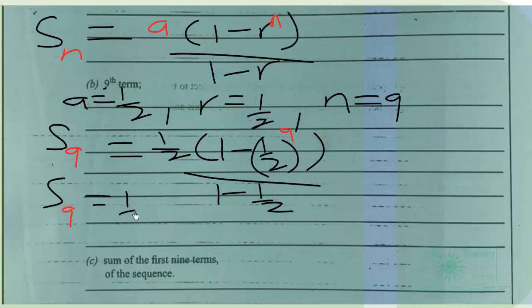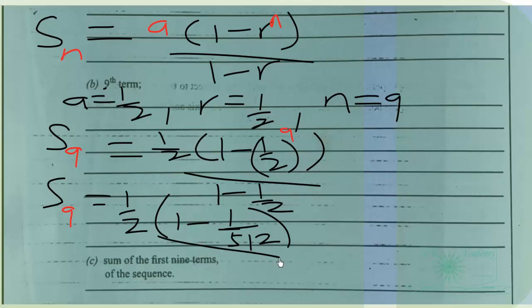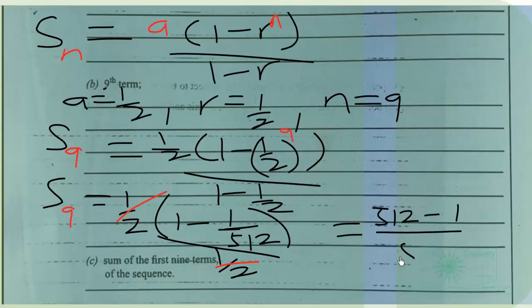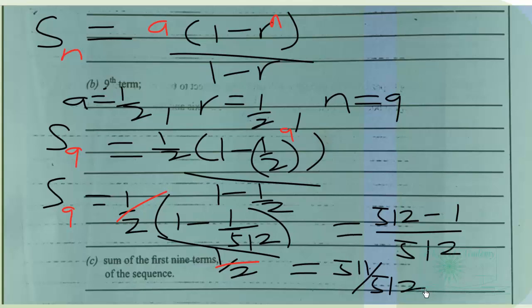Substituting, S_9 = (1/2)(1 − 1/512) / (1/2). The 1/2 terms cancel out, leaving 1 − 1/512. This simplifies to (512 − 1)/512 = 511/512. Therefore the sum of the first nine terms of the exponential sequence is 511/512.